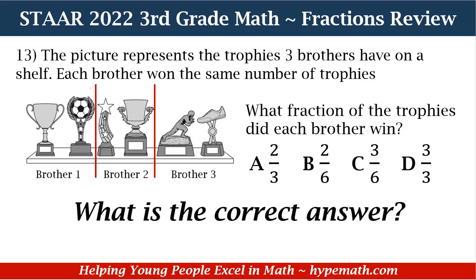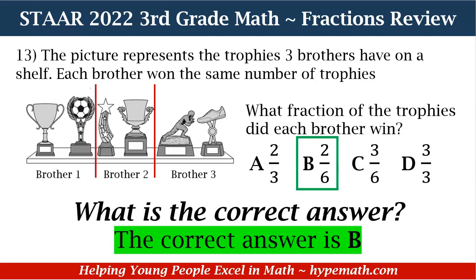To find the fraction: first, count the total number of trophies on the shelf — one, two, three, four, five, six. That is our denominator. Then, to find our numerator, we look at how many trophies each brother won. When we divided the trophies evenly among three brothers, each brother received two trophies. So our correct answer is B — 2/6 — because there is a total of six trophies and each brother received two trophies each.